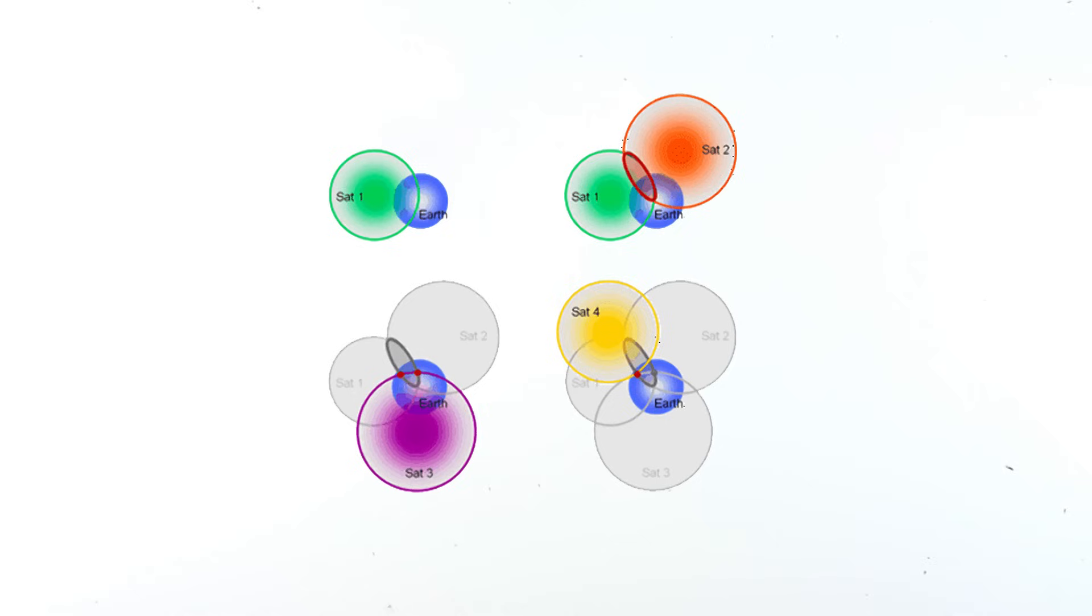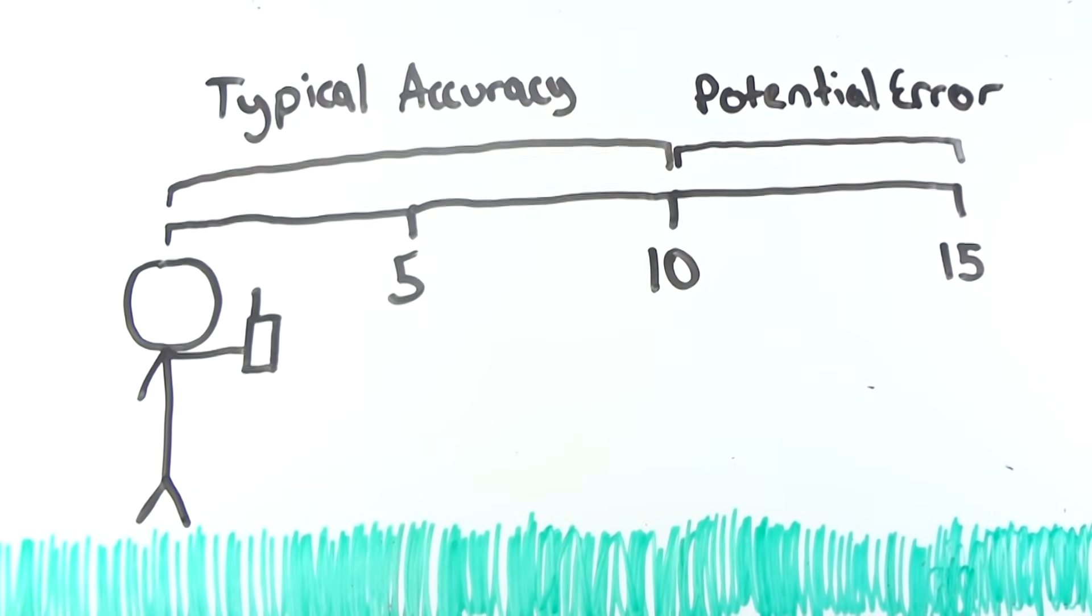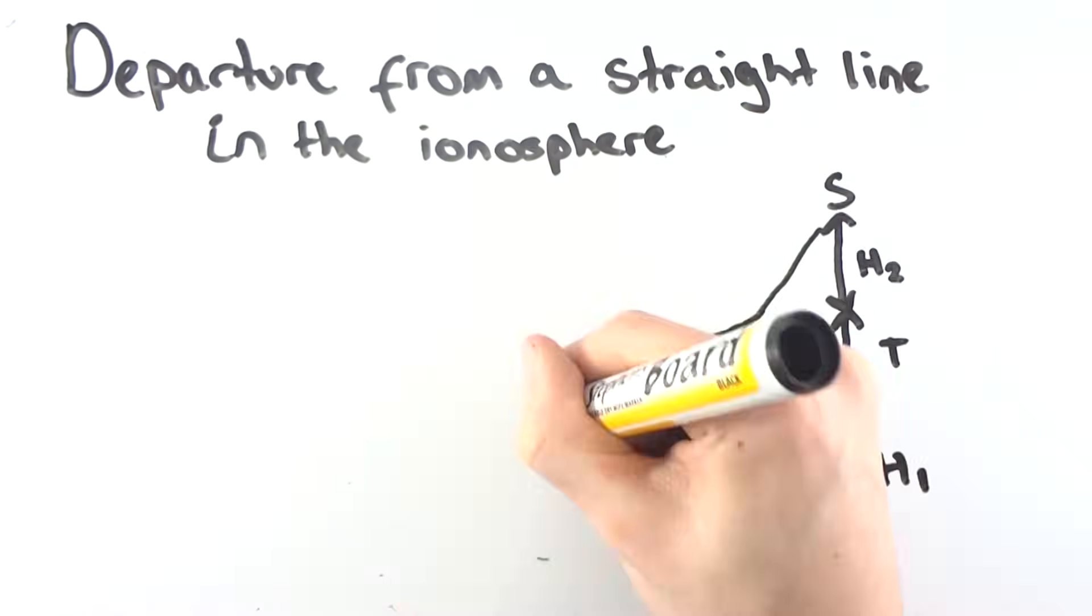By calculating the time differences between these satellites, we move from having no idea where we are to being able to pinpoint where we are, typically down to 5 to 10 metres on average, with the potential error being around 15 metres. There are a lot of factors which escalate the potential error.